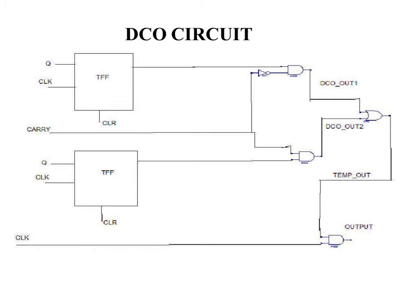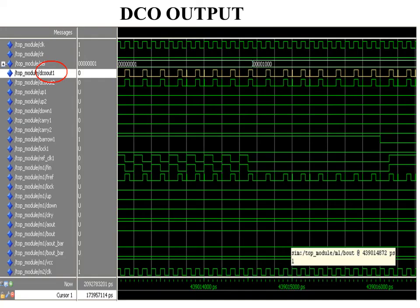This is the DCO output. The clock and clear are the two inputs given. With the select line, we can see that the DCO output has no error, as it is self-correcting by itself.